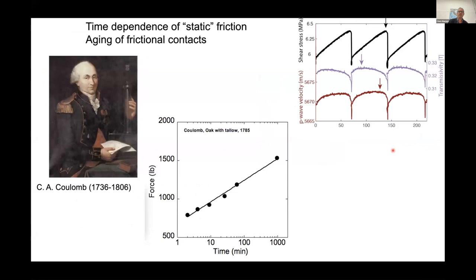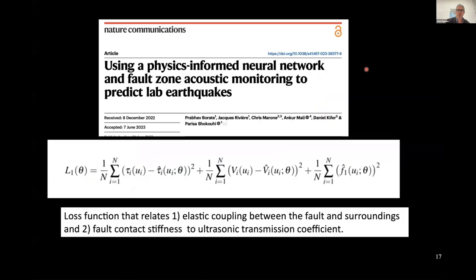The reason the P-wave velocity goes up until the fault starts to move is something Coulomb wrote about in the 1700s — he knew that friction changed as a function of contact time. This is a fundamental part of the rate-and-state friction law, the aging idea: the longer the contacts sit without moving too far, the stronger they get. We can back out information about the way the contacts work. This is work done in Parisa Shikui's group at Penn State — building physics-informed information into the neural network and putting it directly into the loss function of a deep learning model.